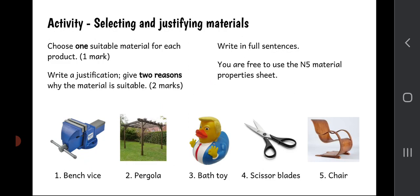Now let's talk about how you write about materials in an exam. A typical question presents you with a product and asks you to choose a suitable material and write a justification giving two reasons. There are three marks available: one for a correct material choice and two for a well-written justification. Always write in full sentences and talk about the material as it's being used. Importantly, if you're given a photograph of a product, you must write about that specific product — not in general terms.